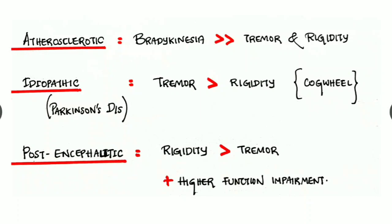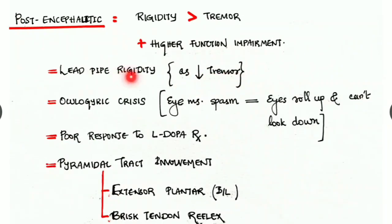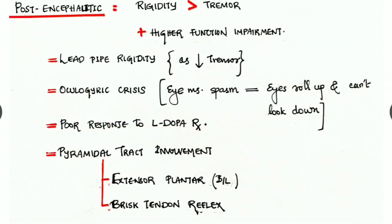In post-encephalitic type, the rigidity is more predominant than the tremor. The tremor is not much significant and it is associated with higher function impairment. As the tremor is less significant, rigidity is of lead pipe type. There is oculogyric crisis, which means the extraocular eye muscles are having spasm and hence the eyes roll up and the patient can't look down. In this type of Parkinsonism, there is poor response to levodopa treatment, and there is pyramidal tract involvement with features of extensor plantars bilaterally and brisk tendon reflexes.